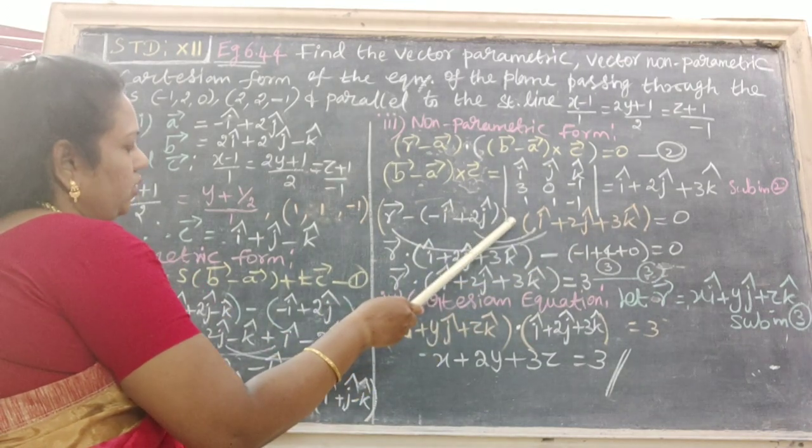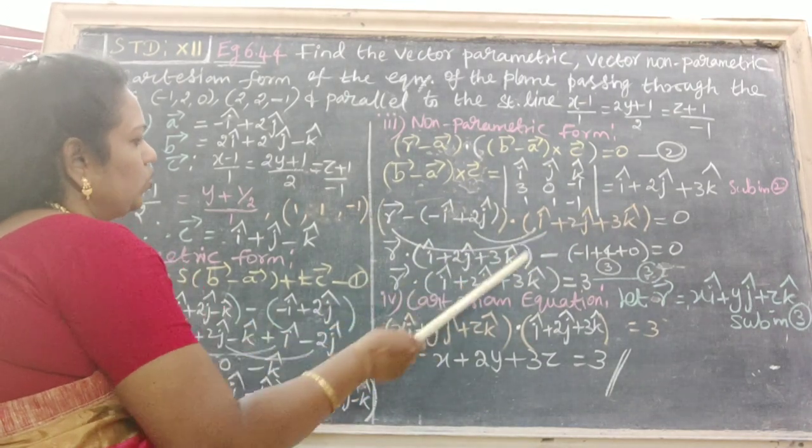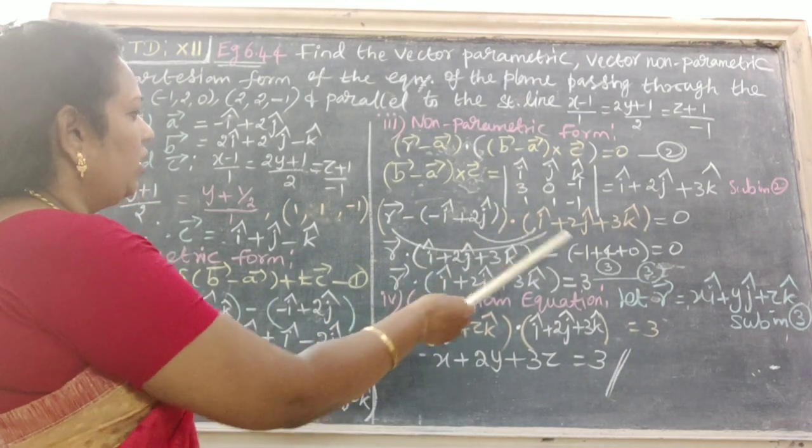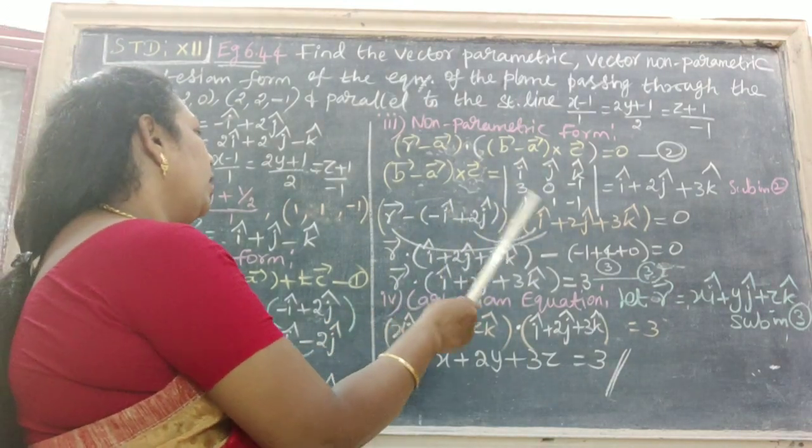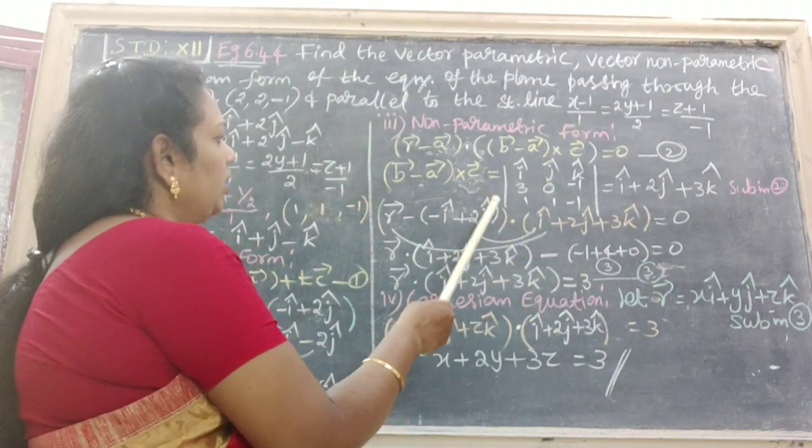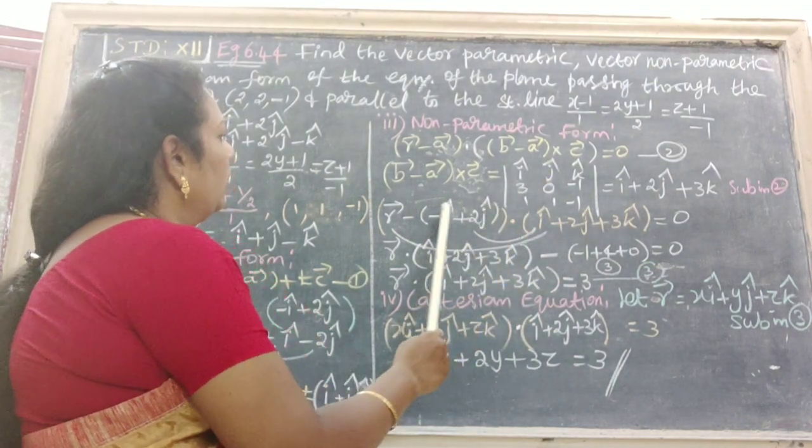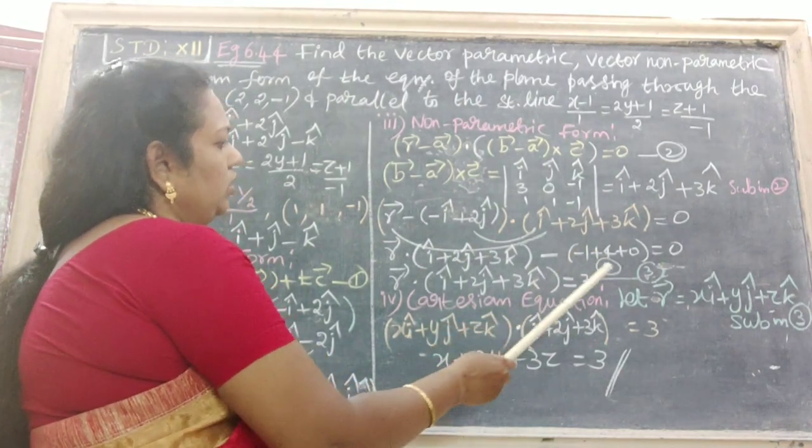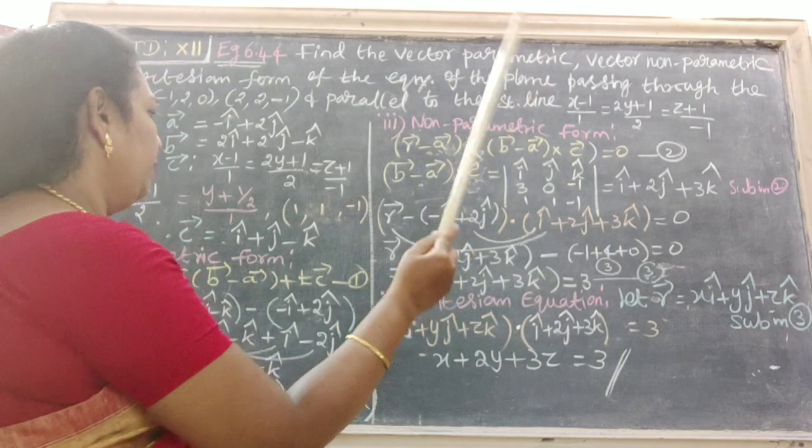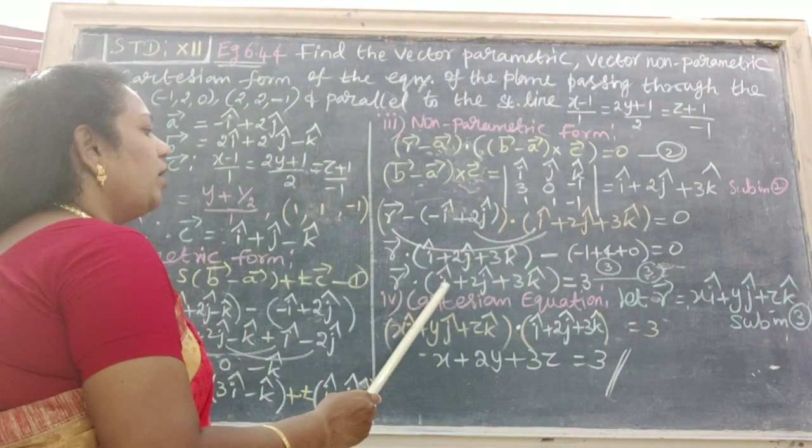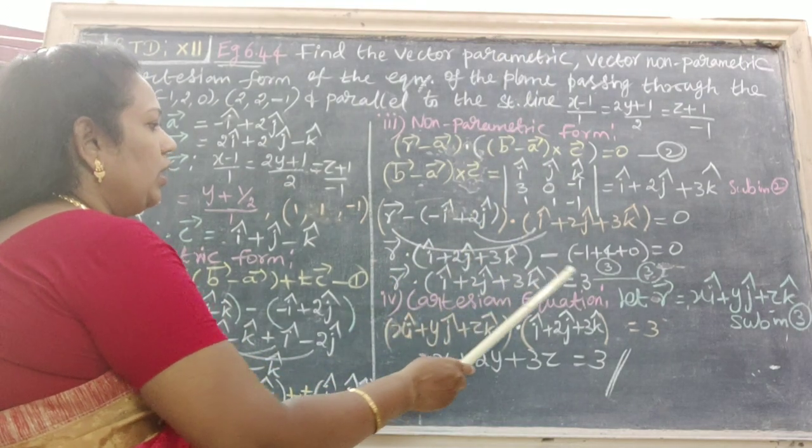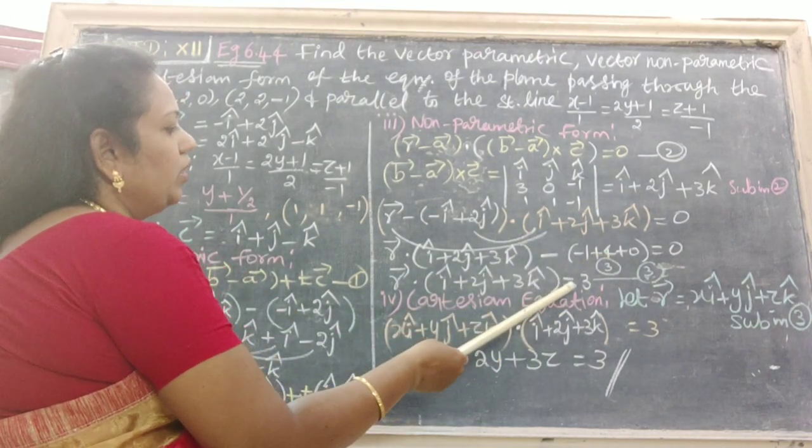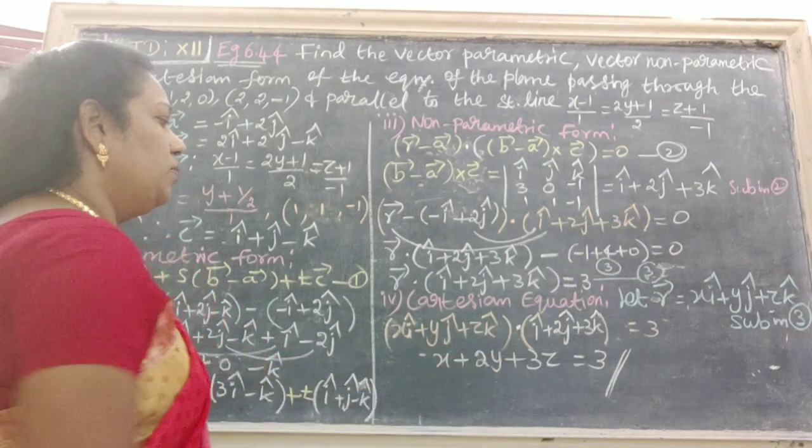Next is dot product. R vector dot this 1 minus this dot this. Therefore, here dot product: i dot i is 1, j dot j is 1, k dot k is 1. Here, k is not, therefore 0. Therefore, -1, 2 into 2 is 4. Therefore, here the answer is -3. Therefore, r vector dot (i cap + 2j cap + 3k cap) equal to -3 goes to the next step. We get equal to 3. That is equation number 3.